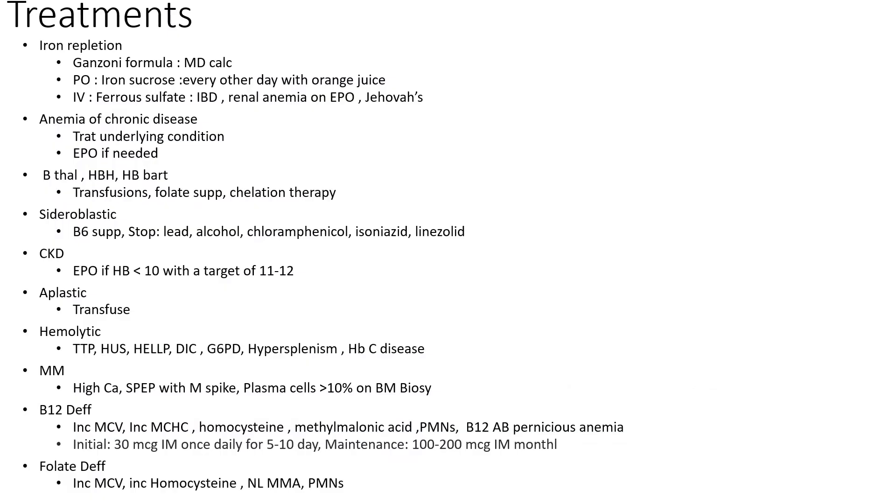All right, so treatments. Let's run through some quick treatments for microcytic, normocytic, and everything in between. If you have iron deficiency and your microcytic anemia, which is very common, you want to go to MDCalc and look for the Ganzoni formula. It'll tell you how much iron to give that person. You want to go with PO or IV. PO usually iron sucrose is the one most people use, and IV is ferrous sulfate. Usually you can give this once you've calculated how much iron you need to replete. You can start giving PO.